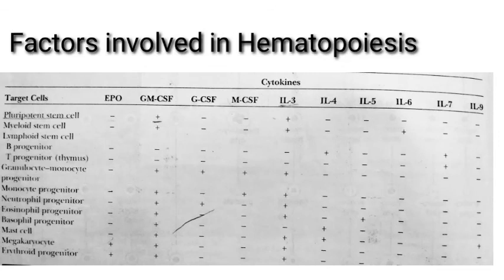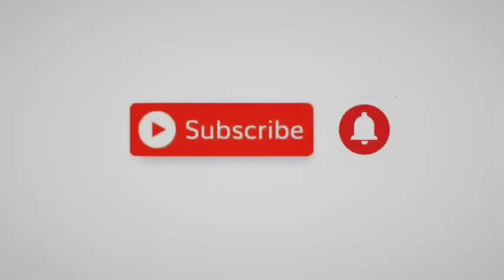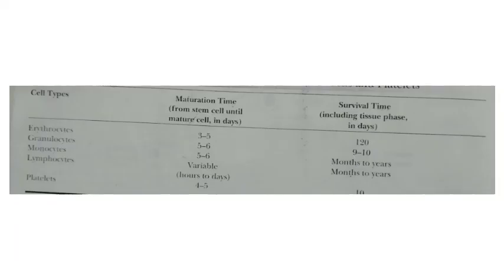Erythrocytes have a maturation time of 3 to 5 days and a survival time of 120 days. Granulocytes have a maturation time of 5 to 6 days and a survival time of 9 to 10 days. Monocytes have a maturation time of 5 to 6 days. Lymphocytes have variable maturation time and a survival of months to years. Platelet maturation time is 4 to 5 days and survival time is up to 10 days.